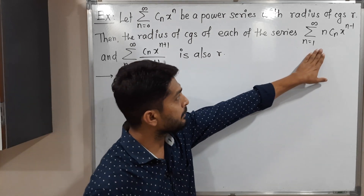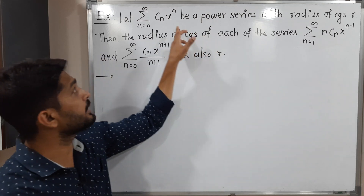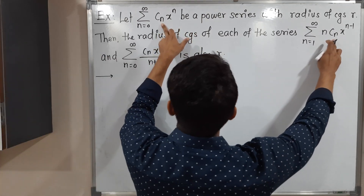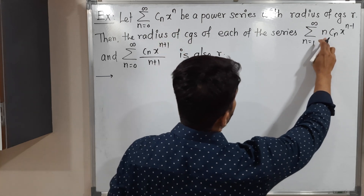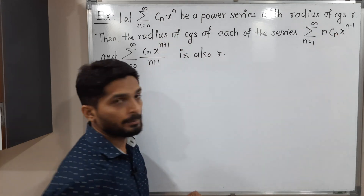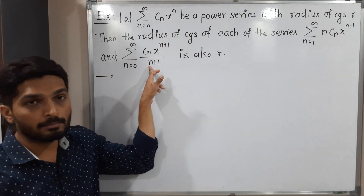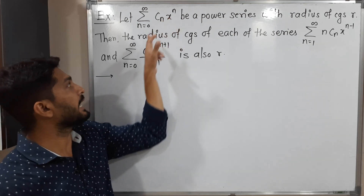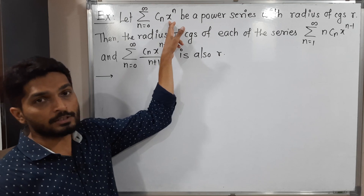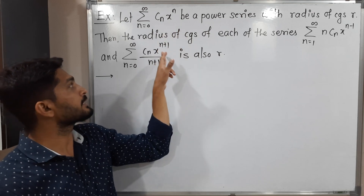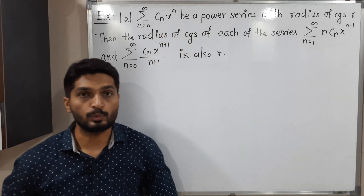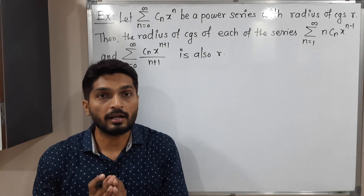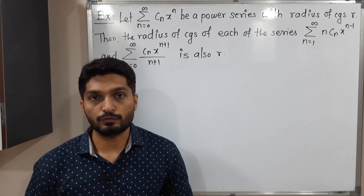The first series can be easily obtained by differentiating this power series. Cn is constant as it is, and the derivative of x raised to n is n x raised to n minus 1. The second power series can be easily obtained by integrating the given power series: Cn as it is, and integration of x raised to n is x raised to n plus 1 upon n plus 1. We have to prove that they both have the same radius of convergence r.